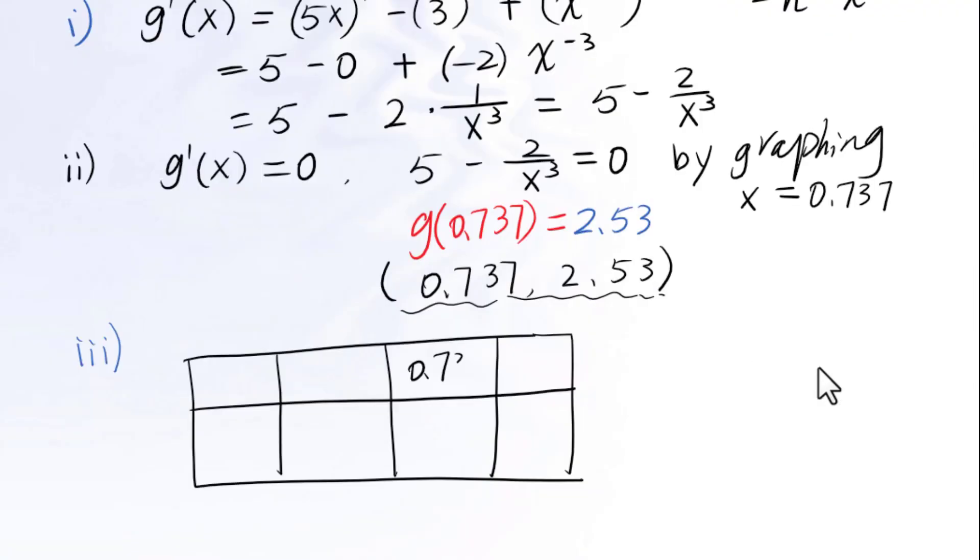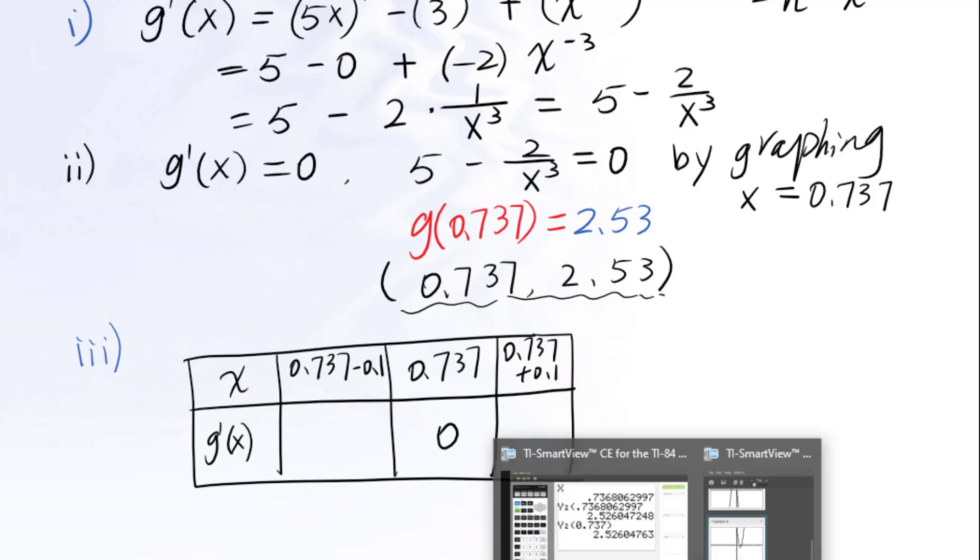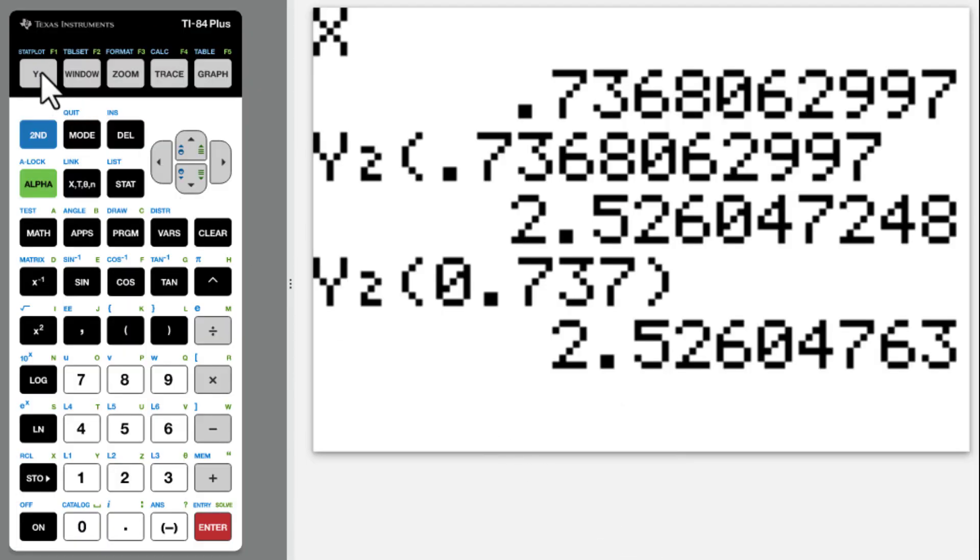We test values around 0.737: 0.737 minus 0.1, 0.737, 0.737 plus 0.1. We will substitute the values into g prime of x. In your calculator remember y1 is the derivative function.